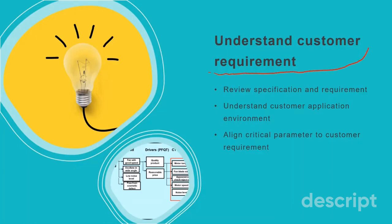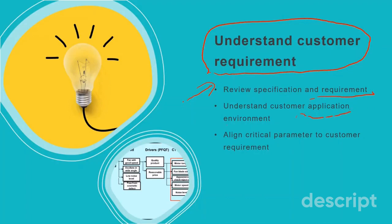Let's start with understanding the customer's requirement. It will not be meaningful to have a report if we do not understand what the customers require — we could be reporting something they are not interested in. First, review the specifications and customer's requirements, understand their application environment, and align your product's critical parameters to those requirements. I have a video on how to convert customer's requirements into critical parameters — link is below and at the end of this video.